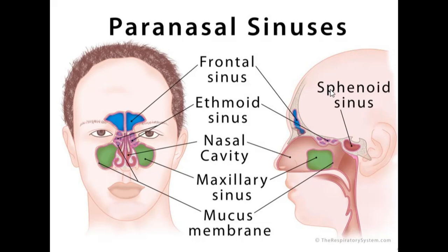We're going to start with the frontal sinus. Follow my cursor — you can see the frontal sinus here in blue. As you'd expect, the frontal sinus is in the frontal bone. One key thing about the frontal sinus is that we do not have it at birth — it's rudimentary. That means it's absent at birth and you develop it as you grow older.